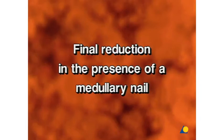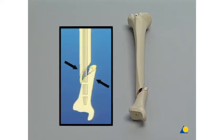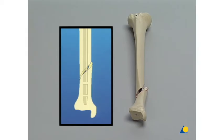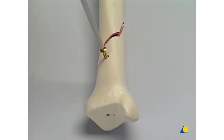Final reduction in the presence of a medullary nail. In the event of a persisting malalignment following medullary nail nailing of a fracture of the lower leg, final reduction can be accomplished before insertion of the locking bolts by means of a pointed reduction forceps inserted through the skin. The reduction can also be forced by using a MISA nail screw. By inserting a MISA nail screw, the bone and the screw are both more or less pushed away from the nail, which is tightly anchored in the proximal main fragment.